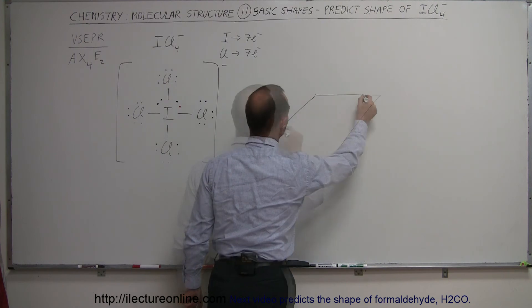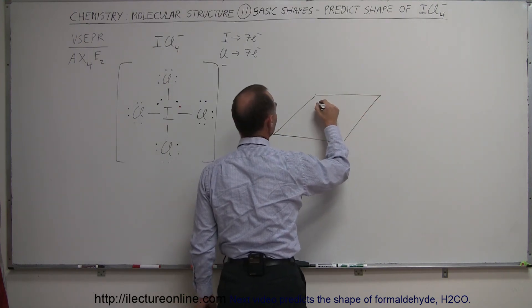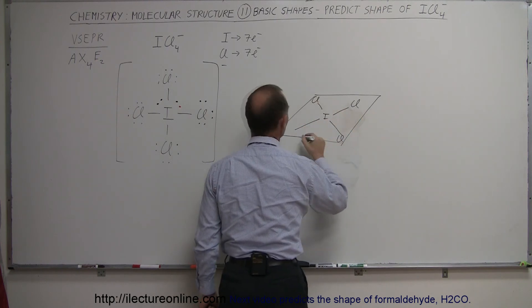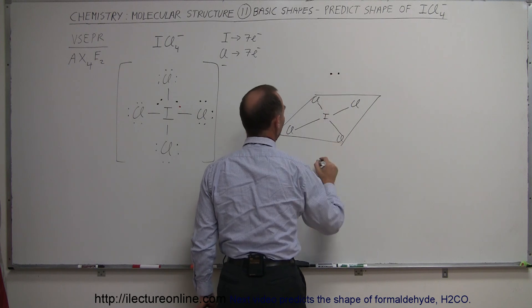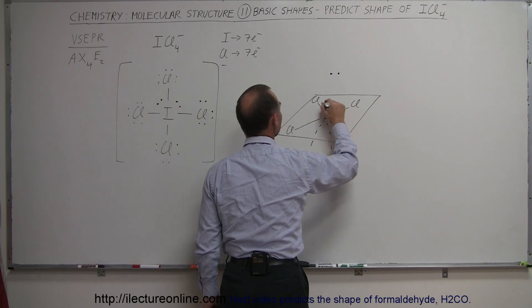So we have a plane, we would have the iodine in the middle, we have the four chlorine atoms like so. Then we have a free electron pair on top and a free electron pair on the bottom, in an orbital shape like that.